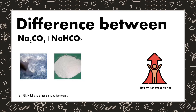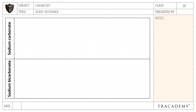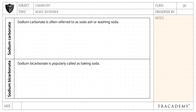In this video, let's understand the difference between sodium carbonate and sodium bicarbonate. Sodium carbonate is referred to as soda ash or washing soda, whereas sodium bicarbonate is popularly called baking soda.